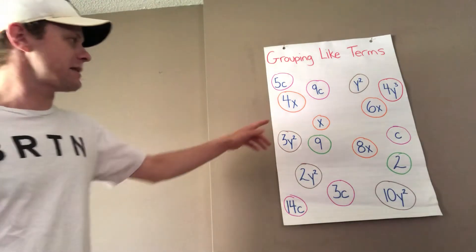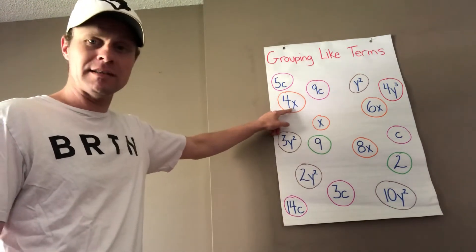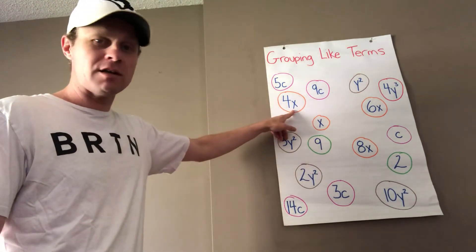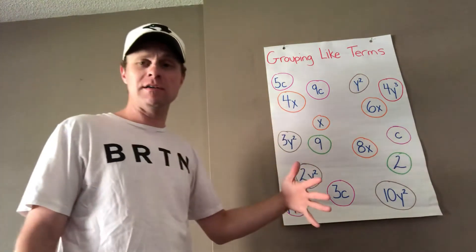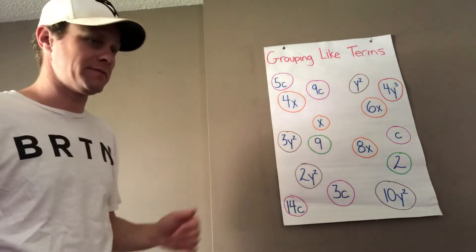So whatever has the same variable with the same exponent. In this case, 4x, that means exponent 1. So if there was 4x squared, we would group that separate because the exponent is different.